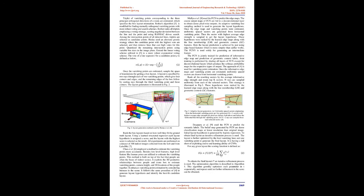Chow et al. employed a method to estimate the vanishing points more accurately. Besides low-level features, high-level features like human poses are utilized to estimate the vanishing points. This method is built on the fact that people are often the focus of indoor scenes. It exploits the 3D geometric relationships between people and room box to jointly estimate vanishing points, camera height, and 3D locations of the people, enhancing vanishing point estimation by considering humans in the scene.